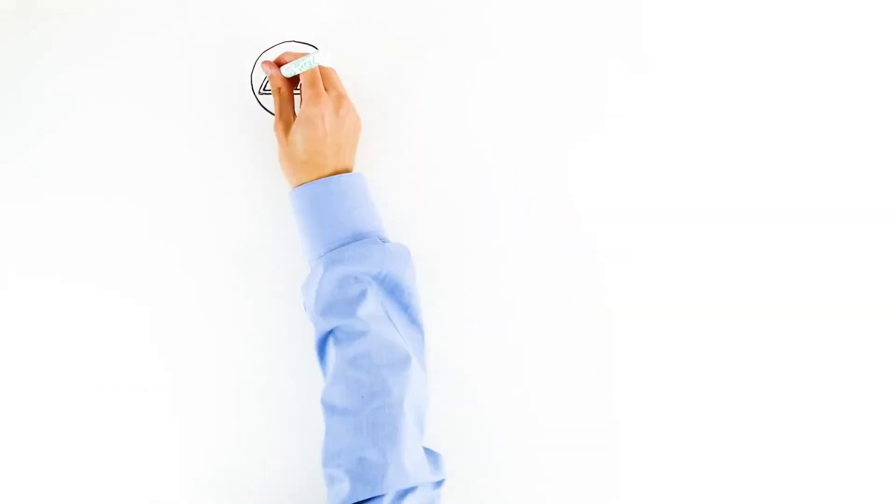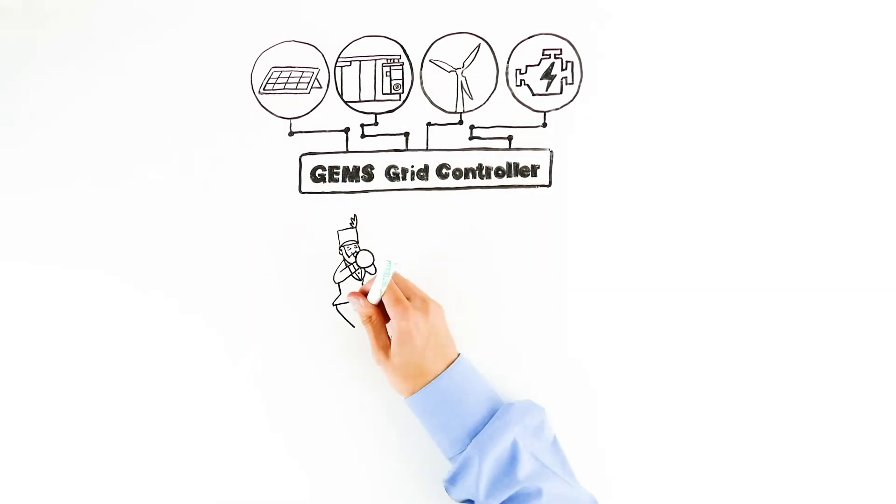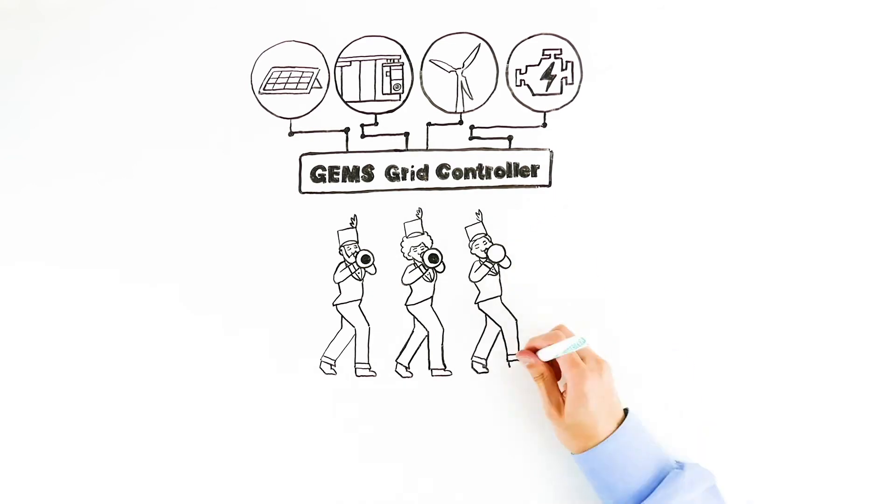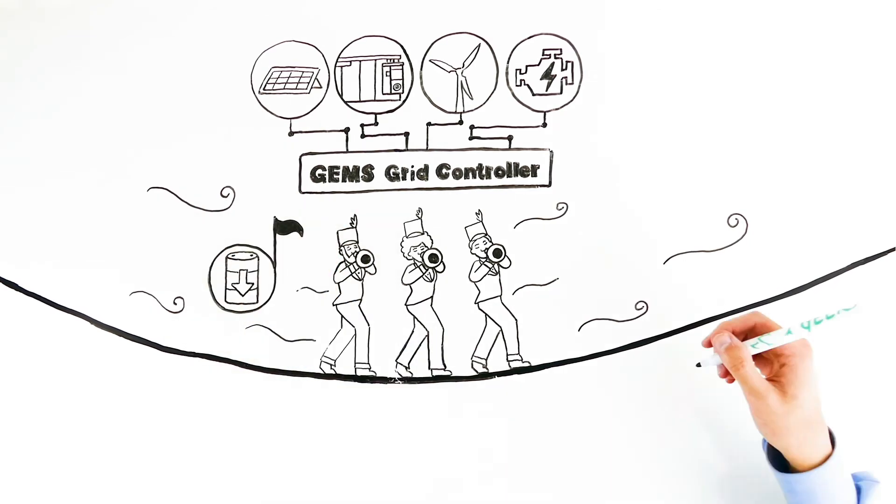By dispatching assets according to forecasted needs within the context of individual unit commitments and constraints, the grid controller maximizes performance and maintains a consistent balance between supply and demand. It also creates a more stable grid, while reducing fuel and maintenance costs.